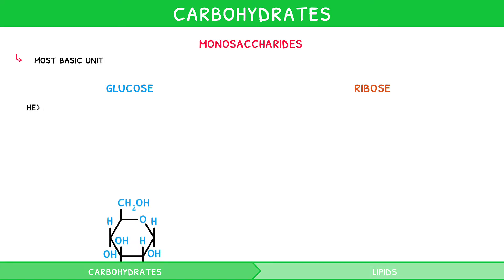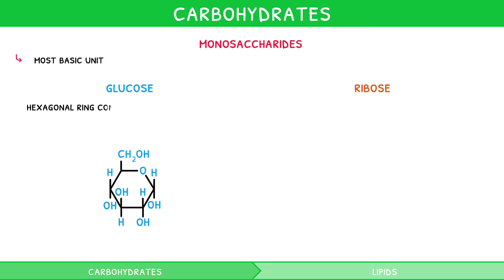Glucose is a hexagonal ring consisting of five carbons and one oxygen in the top right corner. There is a CH2OH group on the upper left carbon, and both a hydrogen and hydroxyl group on the remaining carbons.